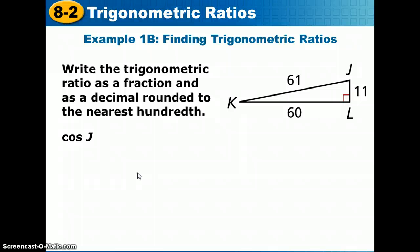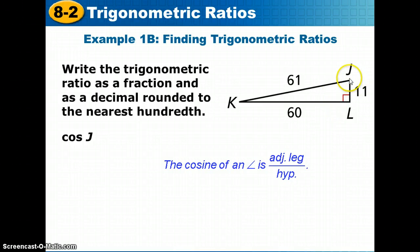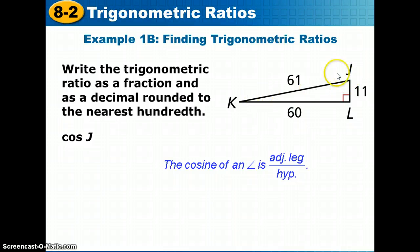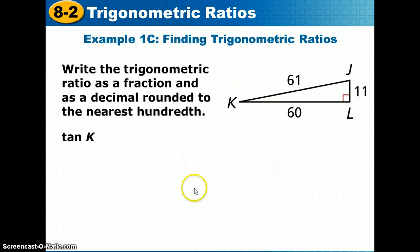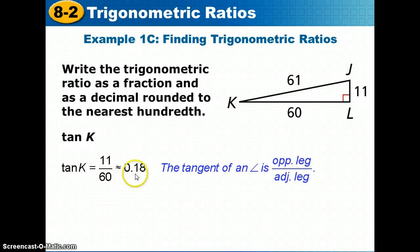For Example 1B, cosine of J is adjacent over hypotenuse. Since 60 was opposite angle J, the adjacent leg is 11, and the hypotenuse is still 61. So cosine of J = 11/61 ≈ 0.18. For the tangent of K, tangent is opposite over adjacent. The opposite leg of angle K is 11 and the adjacent is 60, so tangent of K = 11/60 ≈ 0.18.